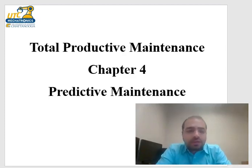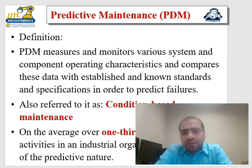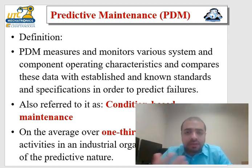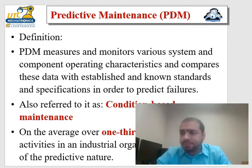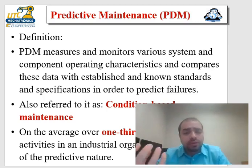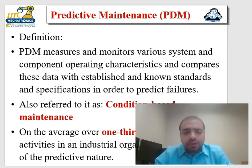This is the lecture for chapter 4, predictive maintenance. We have talked about predictive maintenance, preventive, and corrective maintenance before. Predictive maintenance relies on scientific approaches to predict failure. For example, if you change a lamp every three years, that's preventive maintenance. If you wait until the lamp starts flickering, that's predictive. If you wait until it doesn't turn on at all, that's corrective.